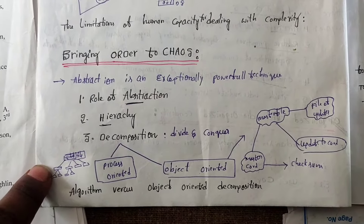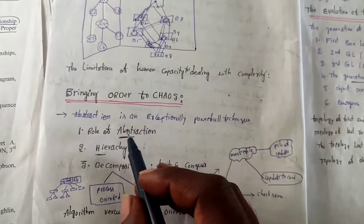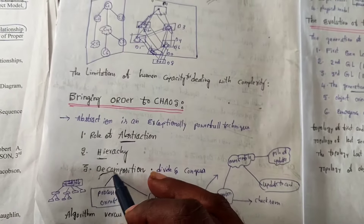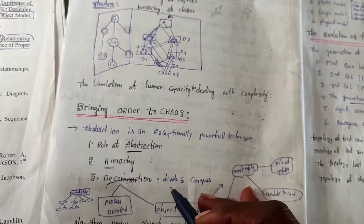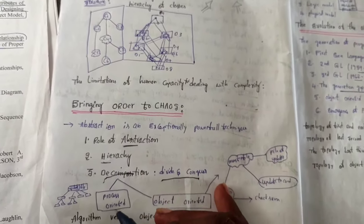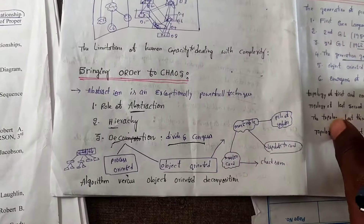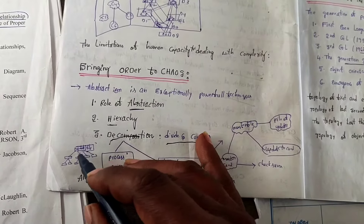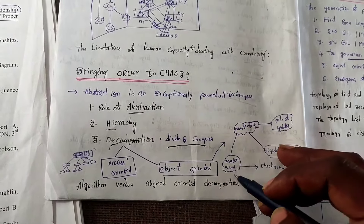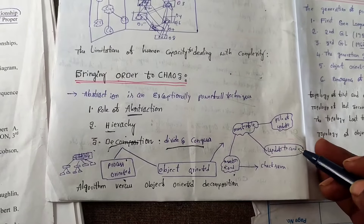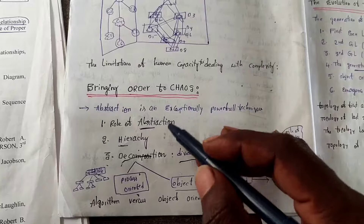The next topic is bringing order to chaos. Abstraction is an expressively powerful technique. This involves the role of abstractions, hierarchy, and decomposition. Decomposition is the divide-and-conquer method and can be divided into two ways: process-oriented and object-oriented. Process-oriented involves updating a file, while object-oriented involves master file, master card, file of updates, updates to card, and checksum. This covers algorithm versus object-oriented decompositions.